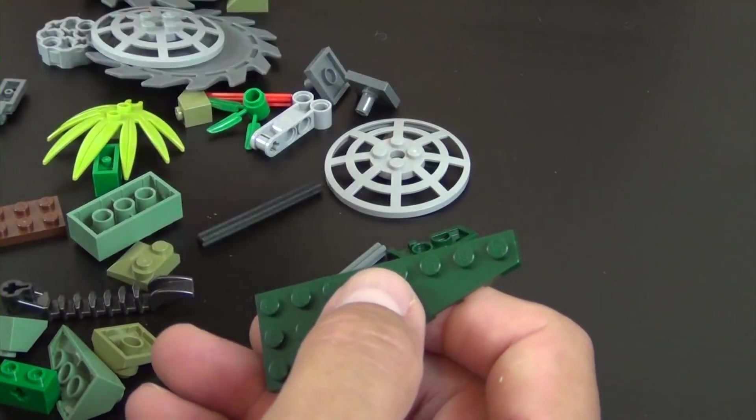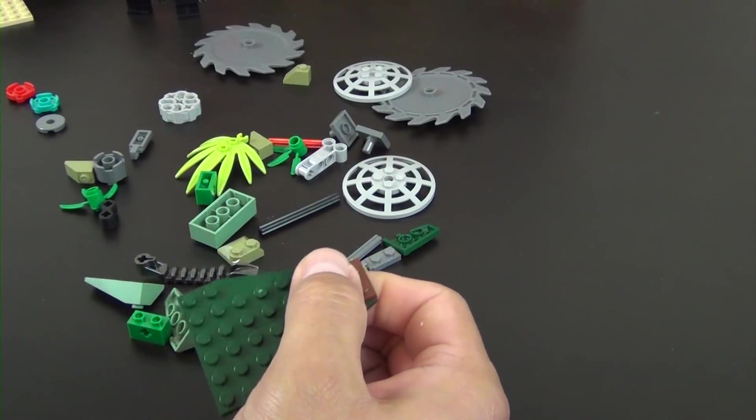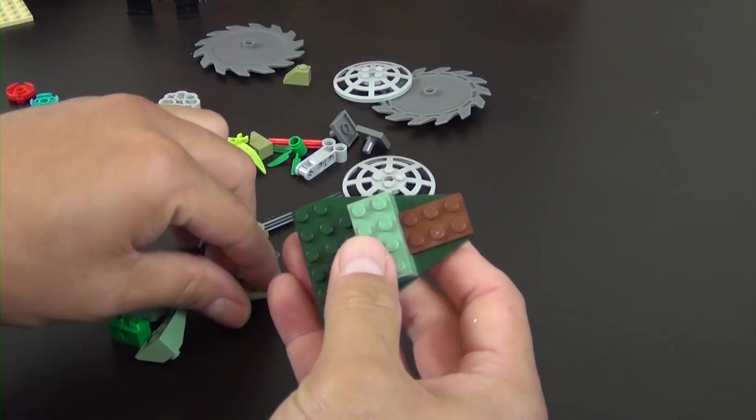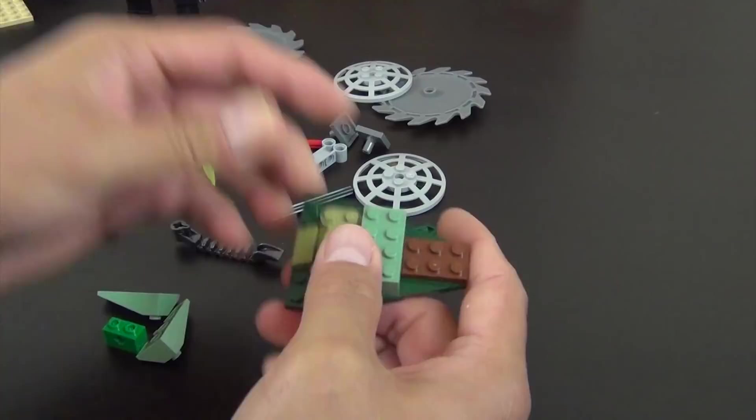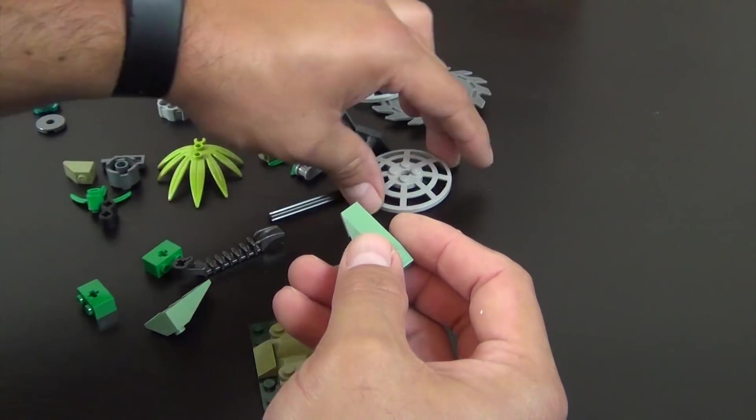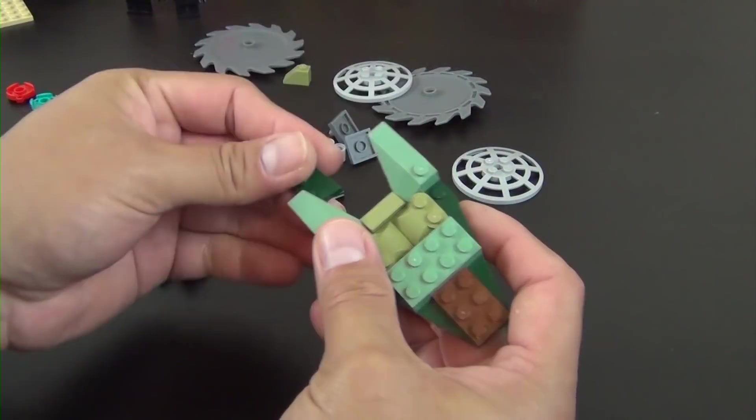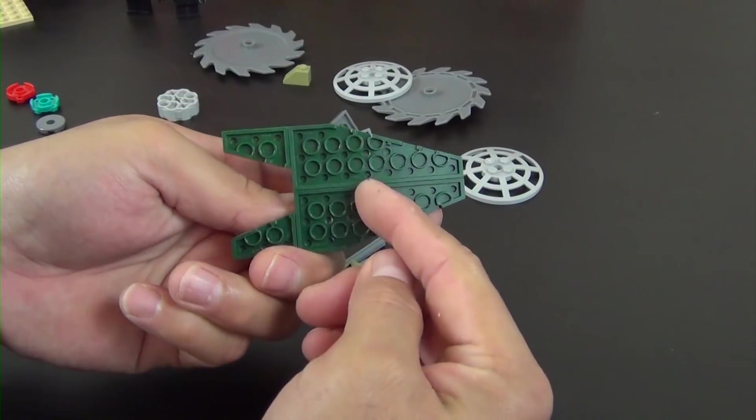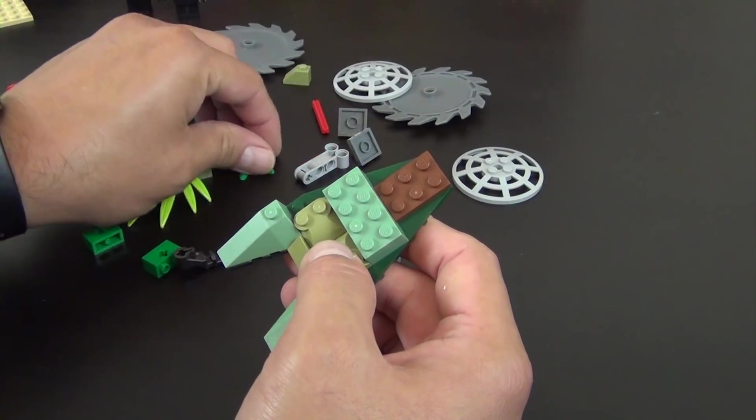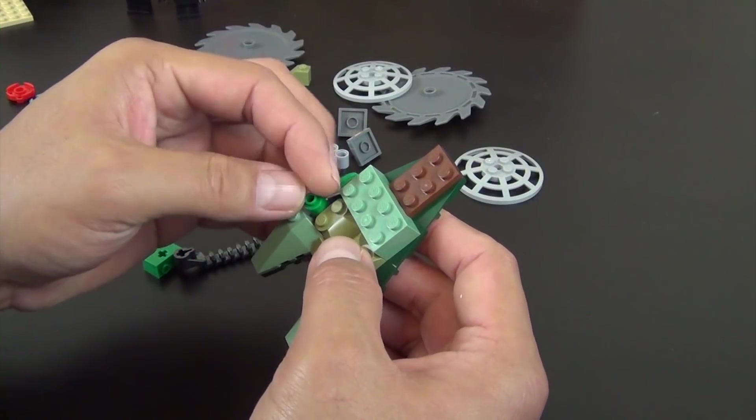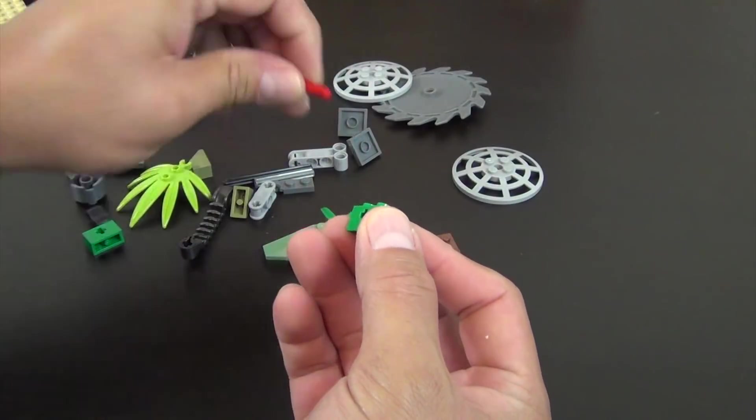All right, so those two are moved to the side. Here we go with our first little portion of the build. It's going to be this rolling wheel launcher. We're starting off with all these shades of green. We've got an assortment of the forest green color, the sand green, and the olive green. And then our plant pieces are your standard LEGO green color, same with these technic bricks.